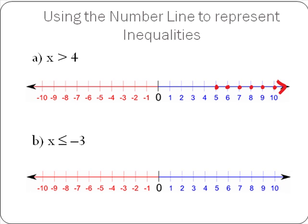Our next inequality was x is less than or equal to minus 3, where x is an element of the real numbers. Minus 3 is the first real number that is a possible solution, because minus 3 is equal to minus 3. To show that we are including minus 3, we use a filled-in circle around minus 3. If the inequality were x is less than minus 3, we would use an open circle to show minus 3 was not a solution. Since it is a possible solution here, we use a closed circle. All real numbers less than minus 3 are also possible solutions, so we draw a continuous line along the number line, and we also include an arrow to show all negative real numbers less than minus 10 are also solutions.